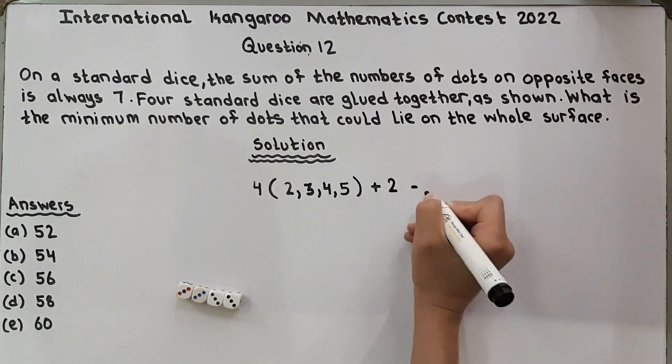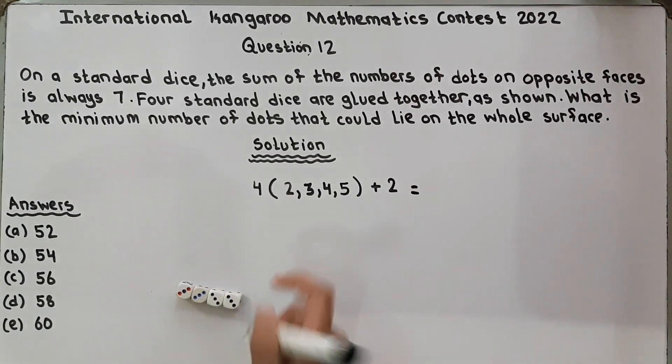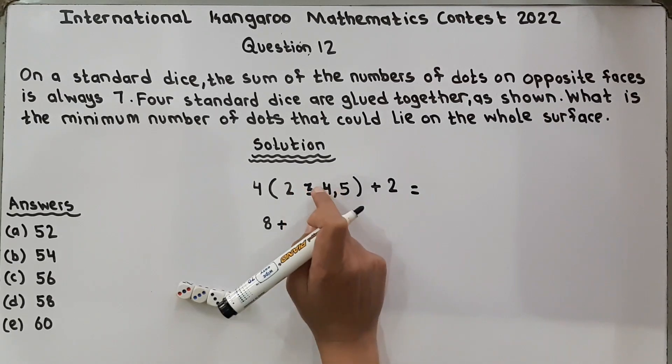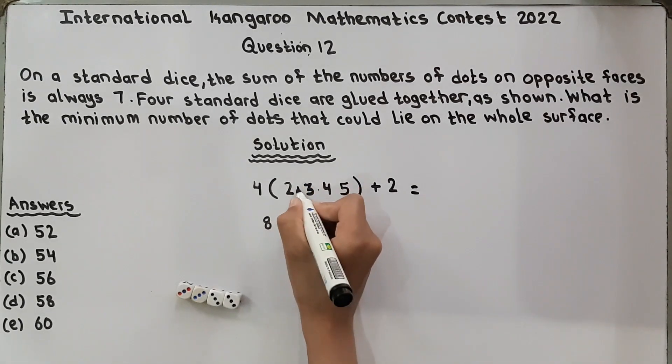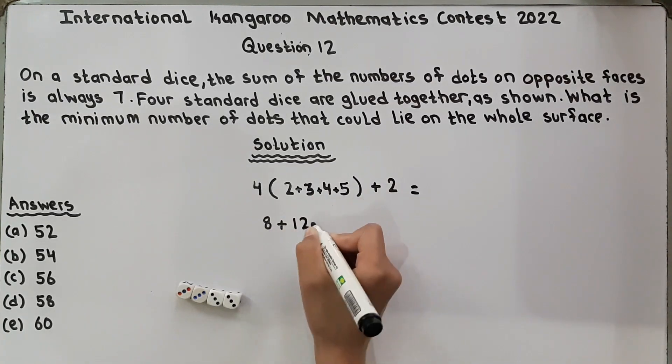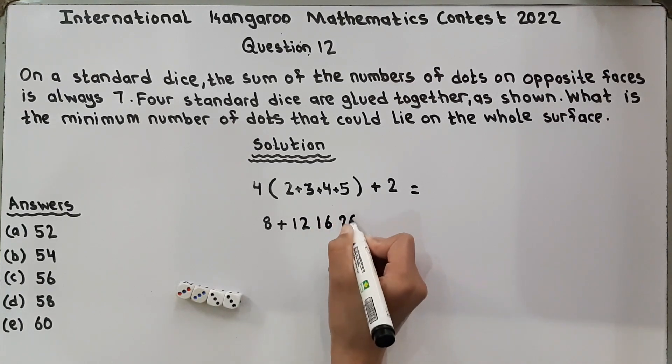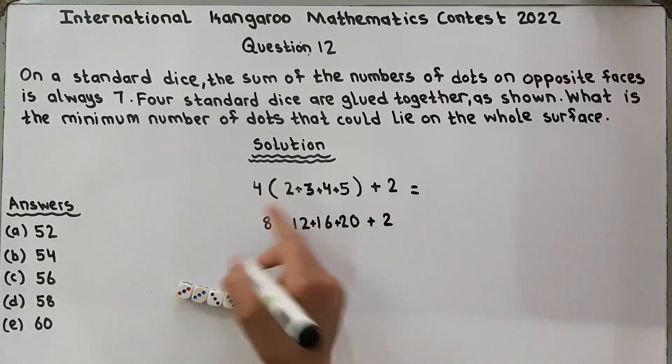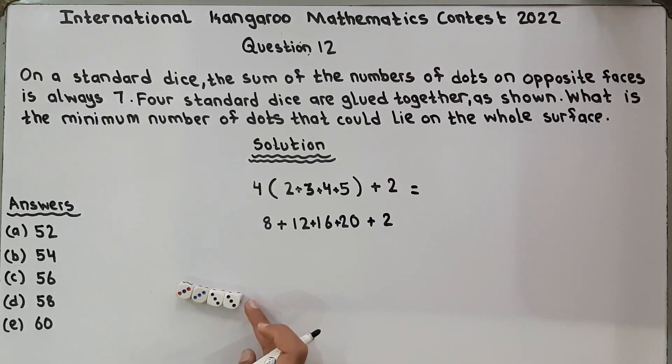Now we will solve it. 4, 2's are 8, plus, here plus signs will come. 4, 2's are 8, and 4, 3's are 12, 4, 4's are 16, 4, 5's are 20. And plus 2. We didn't multiply this by this because we didn't need to multiply these, because these sides are given. We have to find the surface area of the whole surface, that's why we multiplied it with 4. 4 came here because there's 4 number of dice.